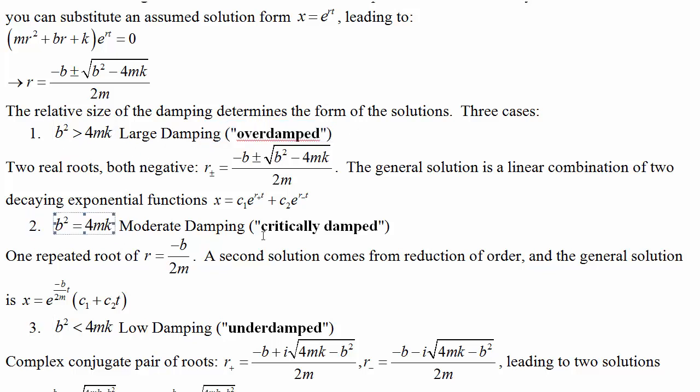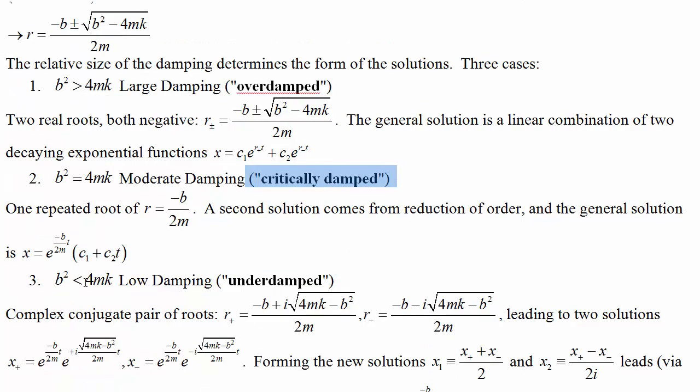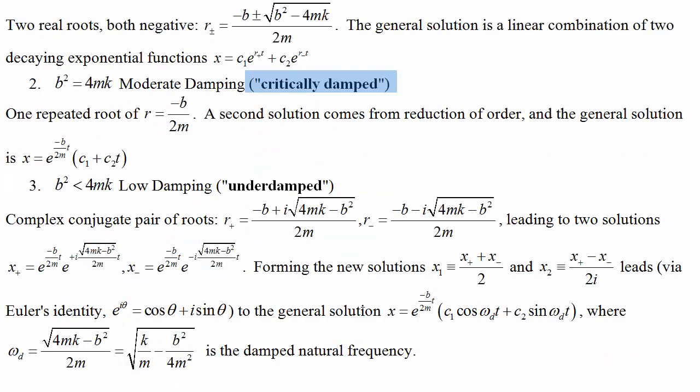If the damping is in this moderate range, where the root gives us zero, it's called critically damped. And if we've got low damping, so that we have imaginary roots and sine and cosine oscillations, it's called an underdamped case.